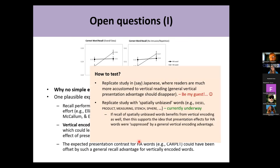One way to test this would be to replicate the study in Japanese or Chinese, where readers are much more accustomed to vertical reading, making it less effortful. My prediction is that the general vertical presentation advantage should disappear, yielding a nice crossover interaction — but I need funding for that. What we're currently doing is replicating the study with spatially unbiased words like diesel, product, measuring, stench, and sphere — words without a strong horizontal or vertical association. If those show a general recall advantage for vertical presentation, that would support the idea of a vertical encoding advantage offsetting the effect for horizontal words.